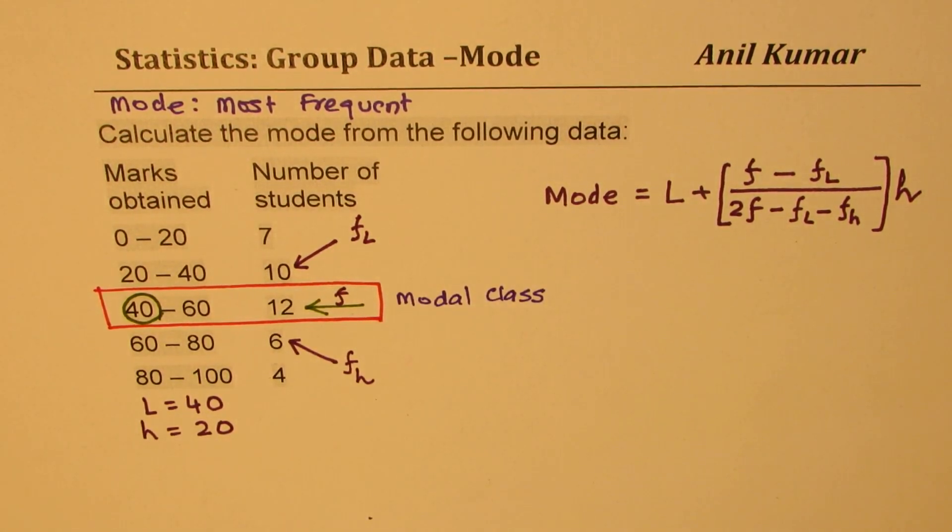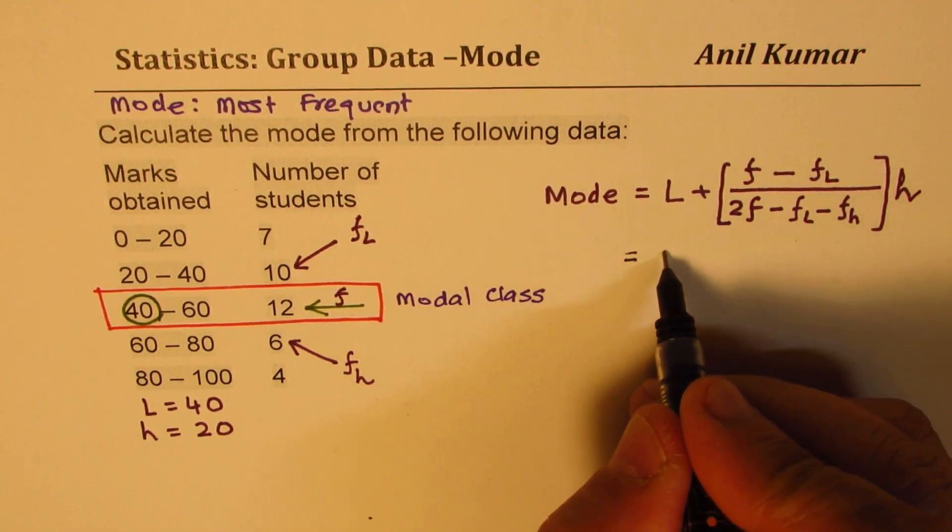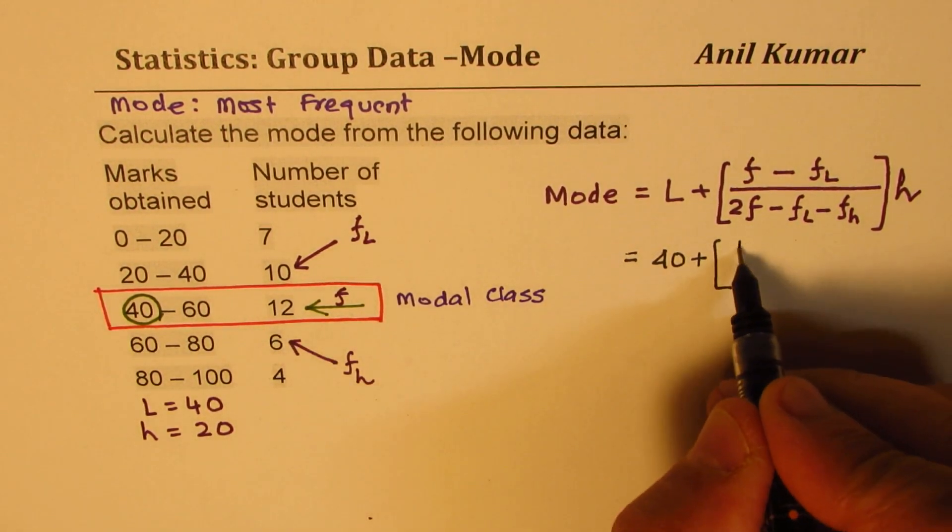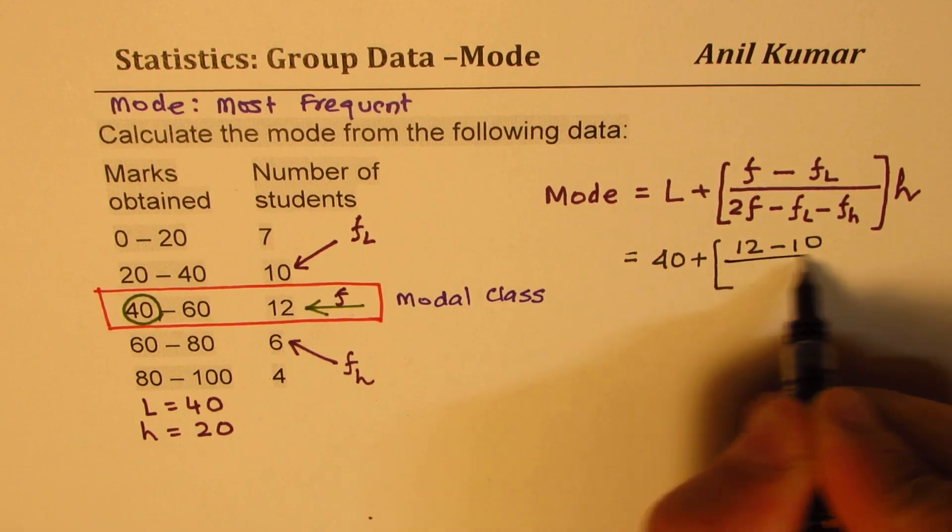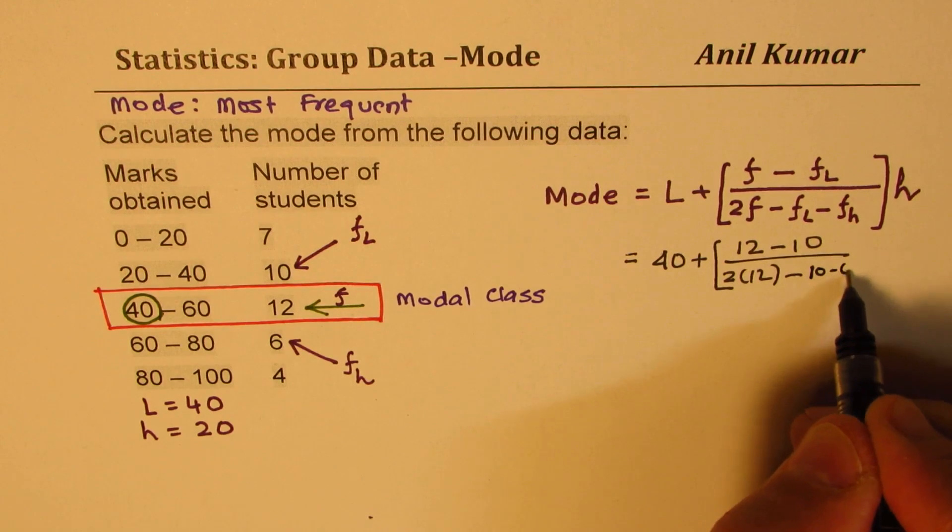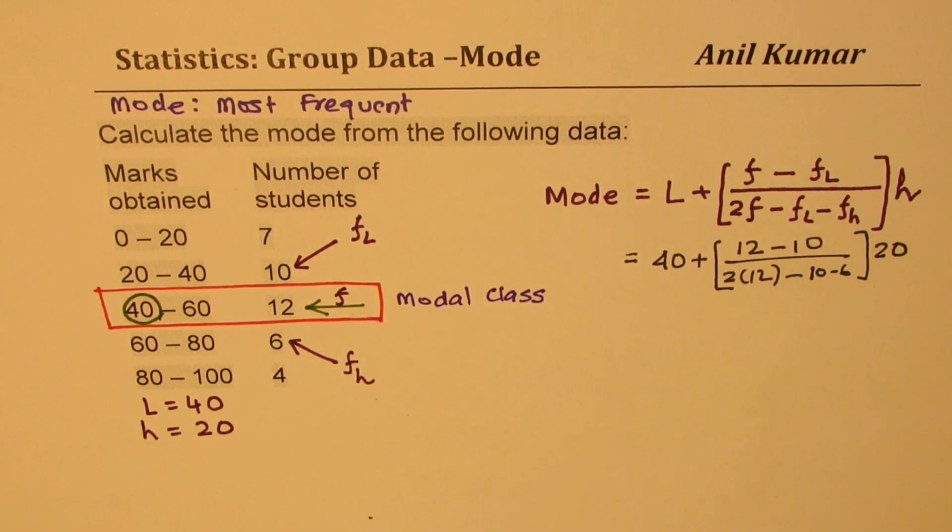Substituting these values, we can easily calculate the estimated mode. So we get here the value as L is 40 plus 12 minus 10 over 2 times 12 minus 10 minus 6 times 20. So that is how we are going to calculate the mode.